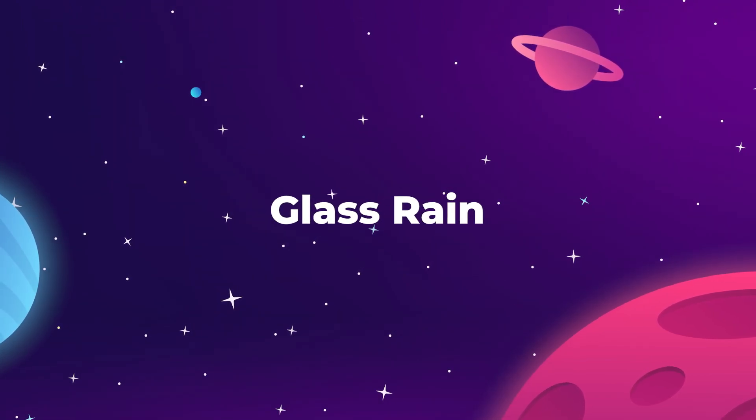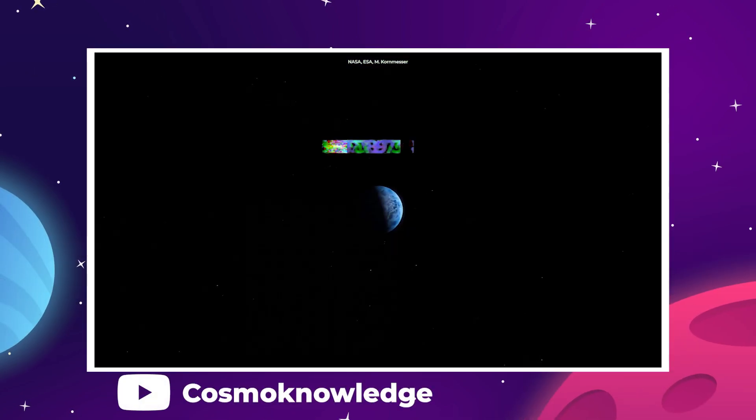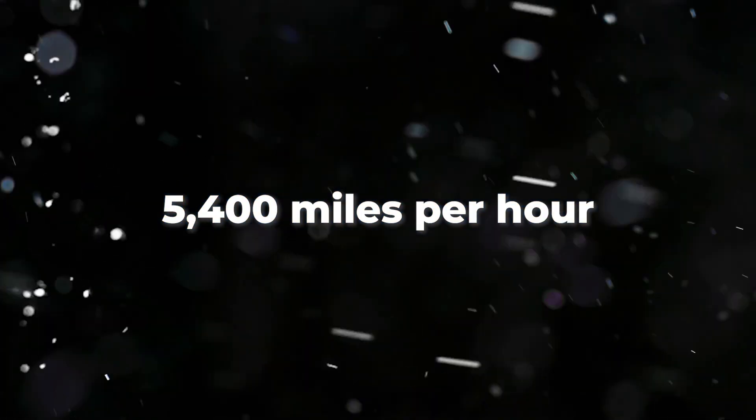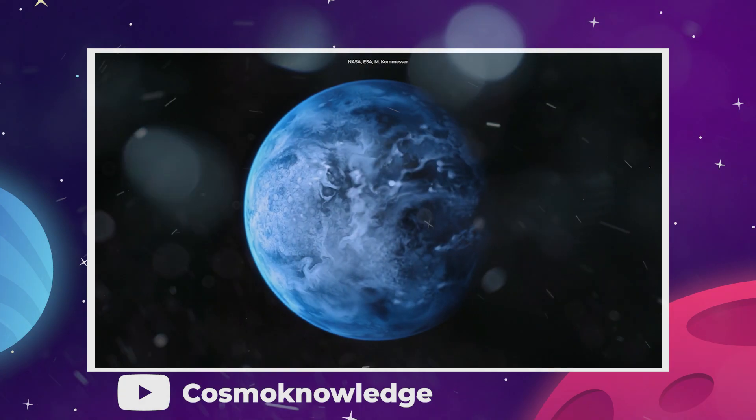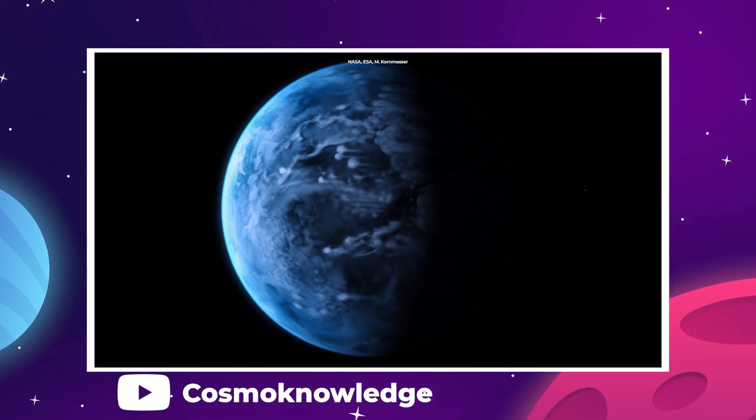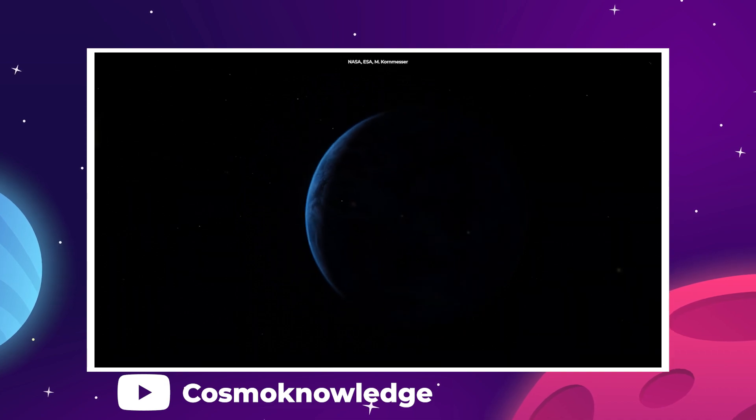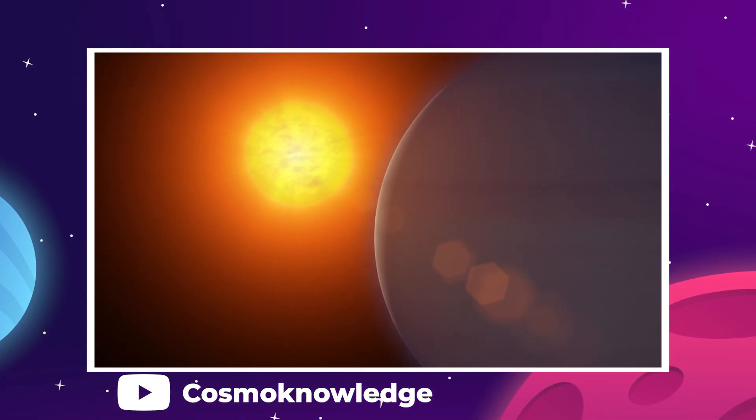Exoplanet HD-189733b is often referred to as the slasher planet, due to the razor sharp rain of molten glass particles that whip around the atmosphere in wind speeds up to 5400 miles per hour, or seven times the speed of sound. The beautiful cobalt blue color of this hot Jupiter's atmosphere isn't the reflection of a water ocean. It's more like the blue flame of an ultra-hot blowtorch.